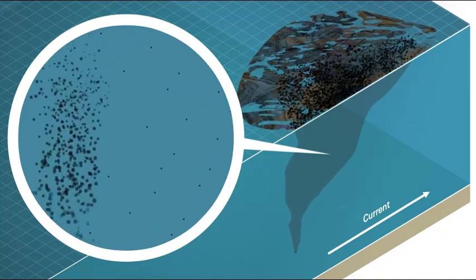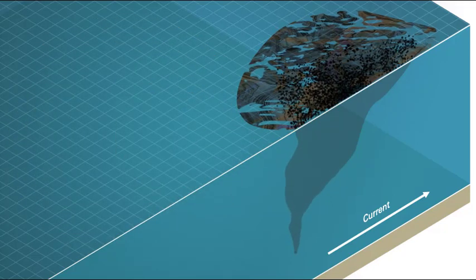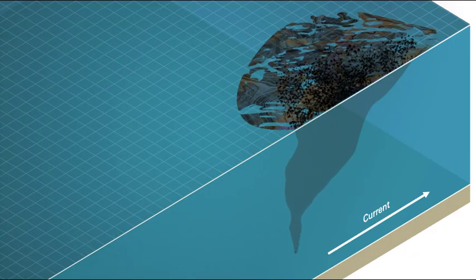Currents mix and carry these droplets through the water column, meaning the oil is more spread out and broken up when it finally does surface.